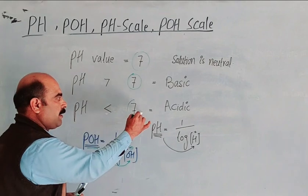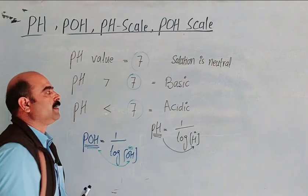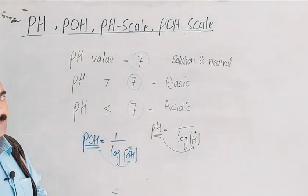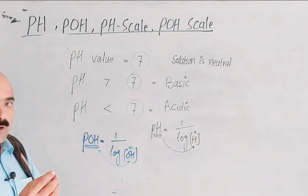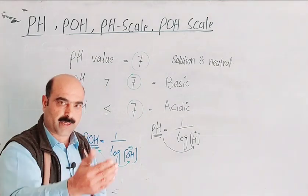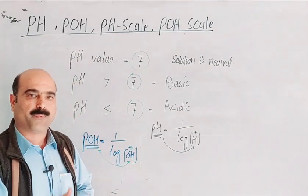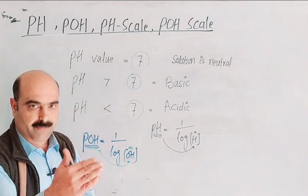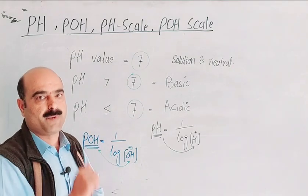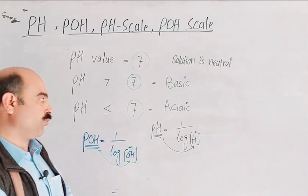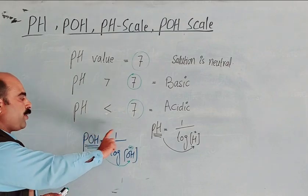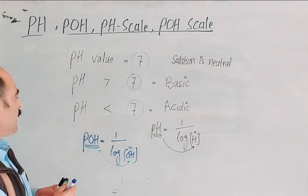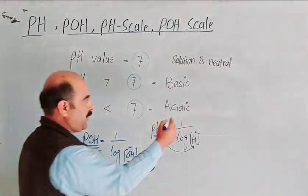The number 7 is the dividing point on the pH scale. Values 0 through 6 are acidic: 0, 1, 2, 3 are strongly acidic; 4, 5, 6 are weakly acidic. A pH of 7 is neutral.